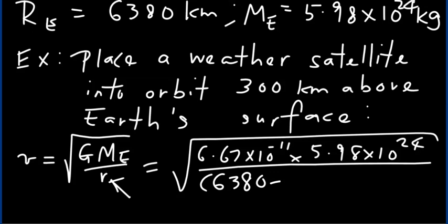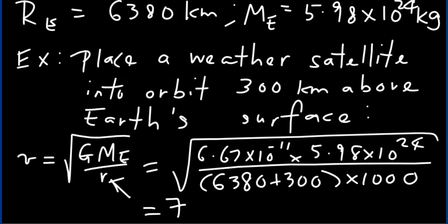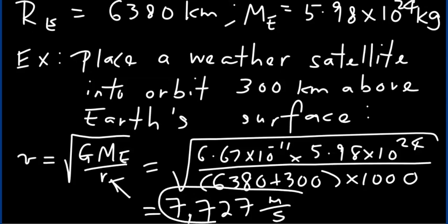The radius of the orbit is the radius of Earth — 6,380 kilometers — plus the 300 kilometers altitude, converted into meters by multiplying by 1,000. This gives a speed of 7,727 meters per second, which is the speed needed to place the satellite in orbit at that altitude.